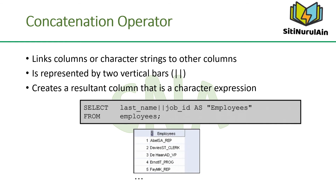You can link columns to other columns, arithmetic expressions, or constant values to create a character expression by using the concatenation operator. Columns on either side of the operator are combined to make a single output column. In the example, last_name and job_id are concatenated and given the alias 'Employees'. Note that the last name and job code are combined into a single output column. The AS keyword before the alias name makes the SELECT clause easier to read.